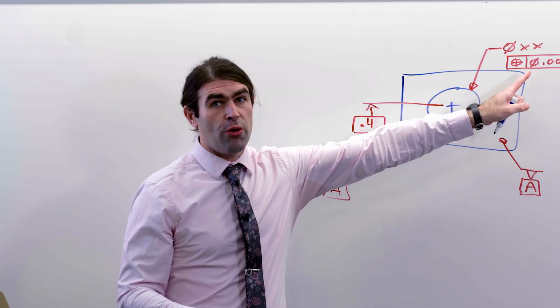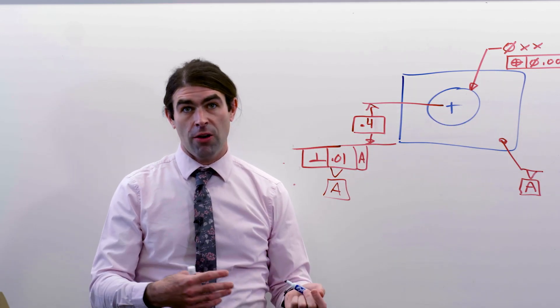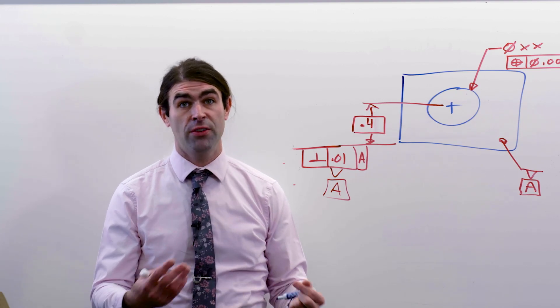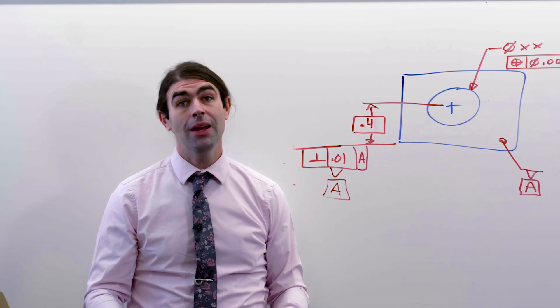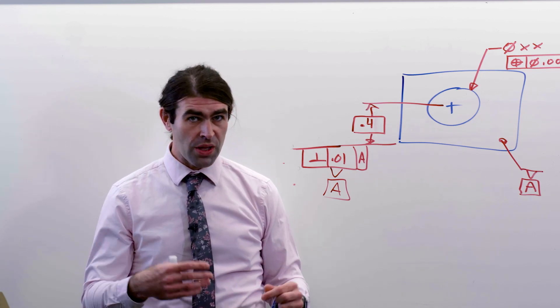In this feature control frame, we've got a diameter symbol. It applies to this hole. You could make an argument that you really don't need that. It's kind of obvious that it applies to the hole because there's only one feature control frame. But we still put it there just so people, there's like a double-check system.